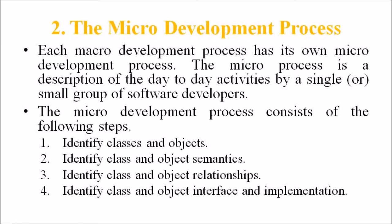The micro development process consists of following steps: identify the class and object, identify class and object semantics, identify class and object relationship, and finally, identify class and object interface and implementation.